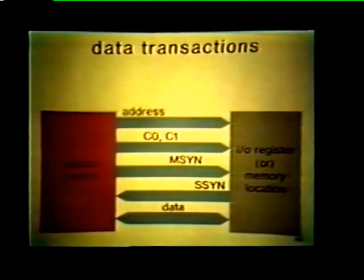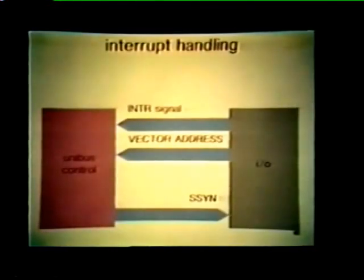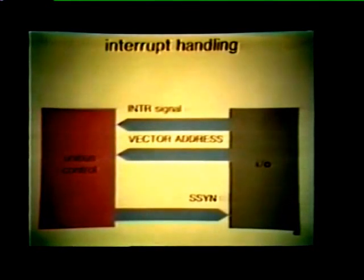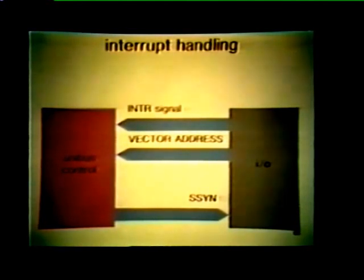Now let's see how the unibus control functions when a device interrupt occurs. When a device interrupts the processor, the unibus control receives the interrupt signal and vector address from the IO device. The unibus control then responds by issuing a slave sync signal, or SSYN, to inform the device that its interrupt vector has been accepted.